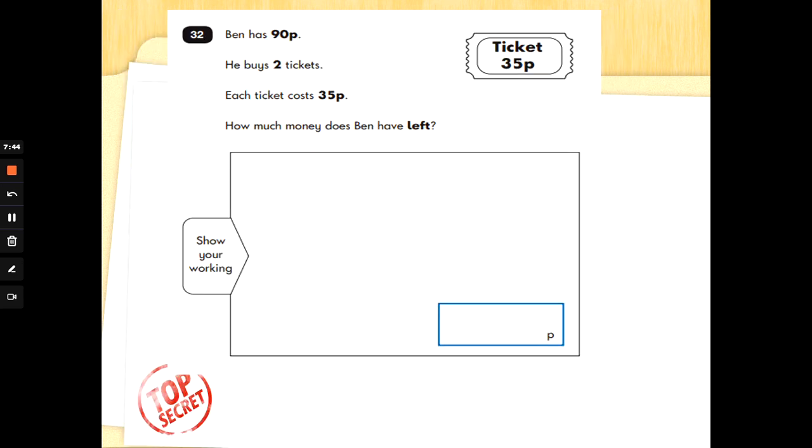Number 32. Ben has 90 pence. He buys two tickets. Each ticket costs 35p. How much money does Ben have left? And we've got a working out box again. So which means we've got to work out the cost of the tickets and then take that away to work out how much money Ben's got left.